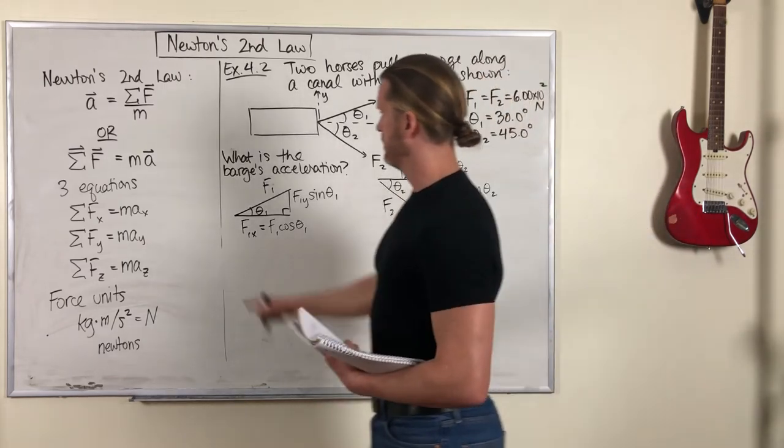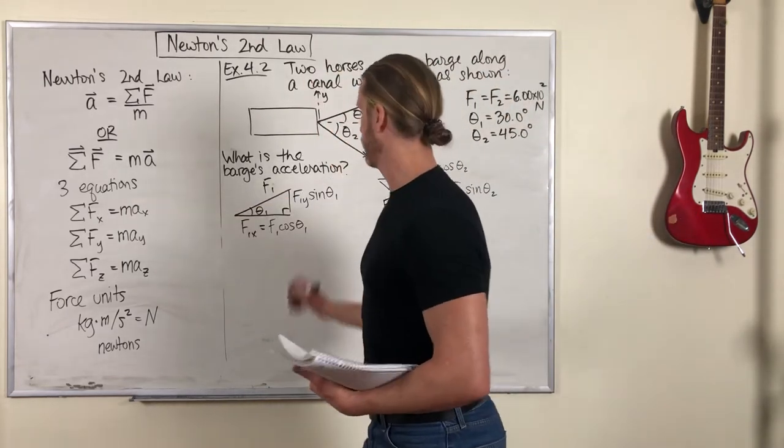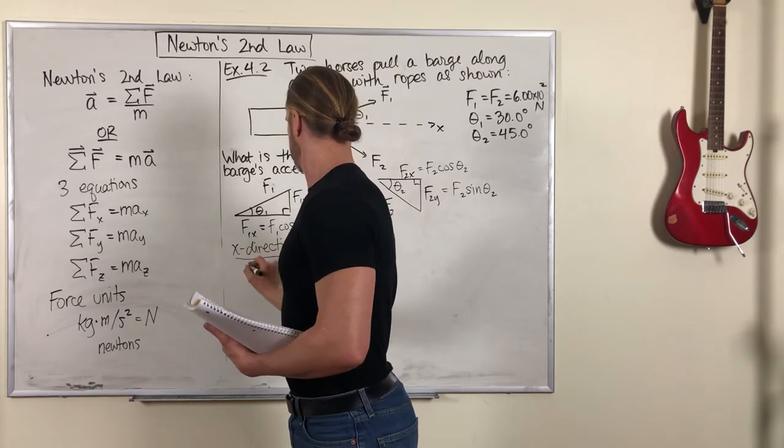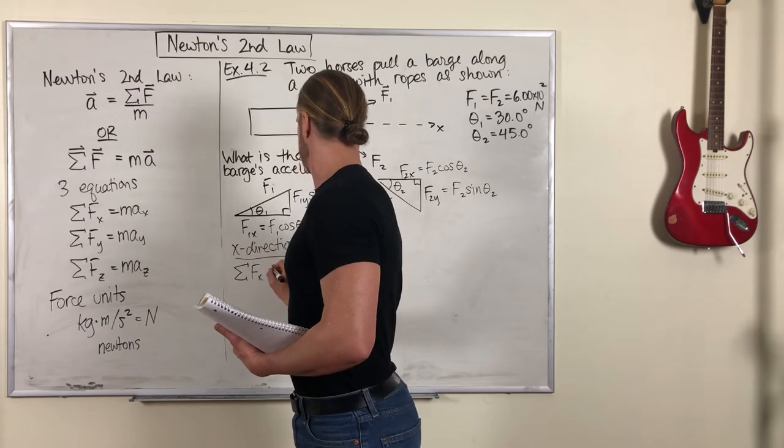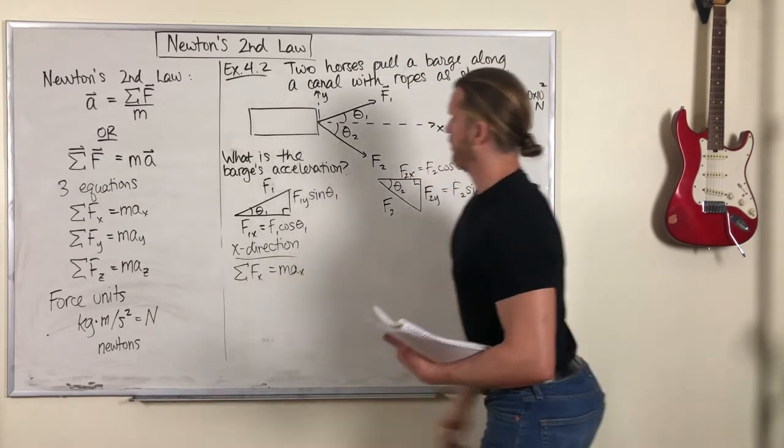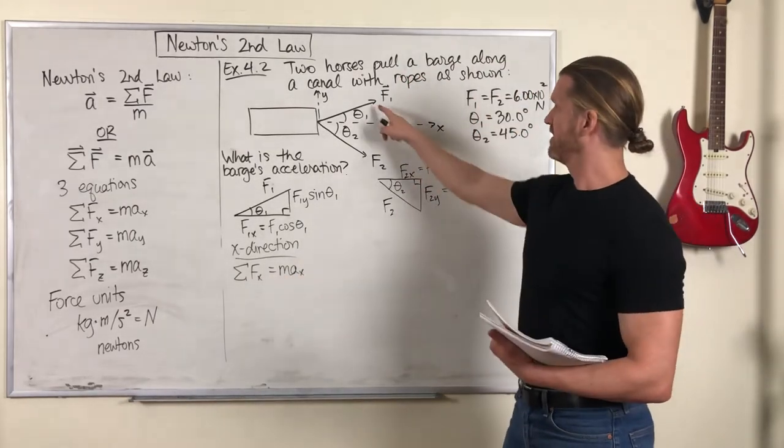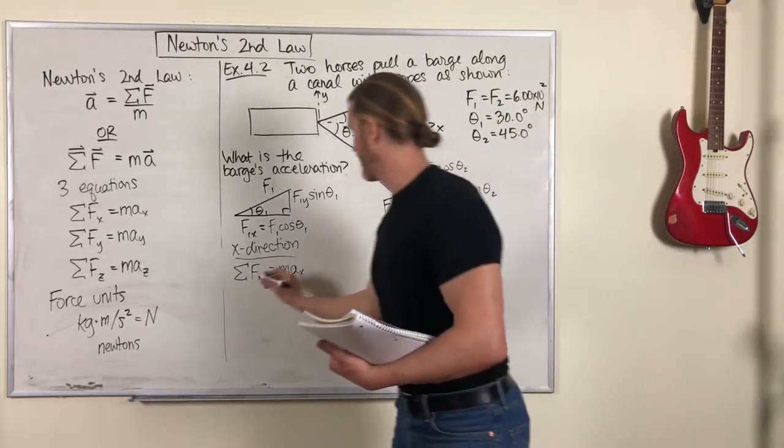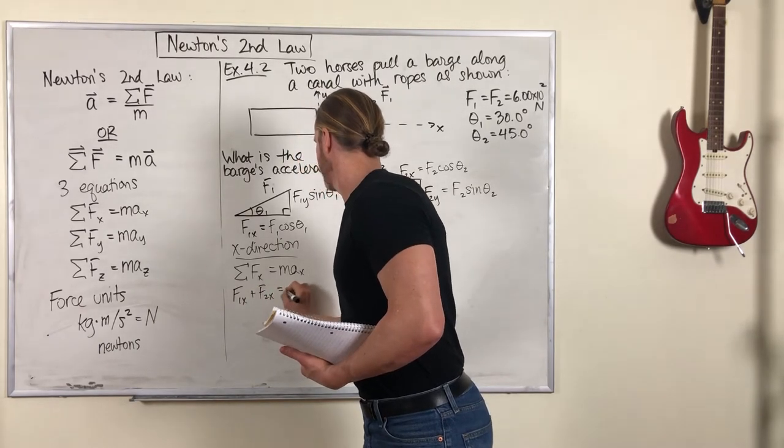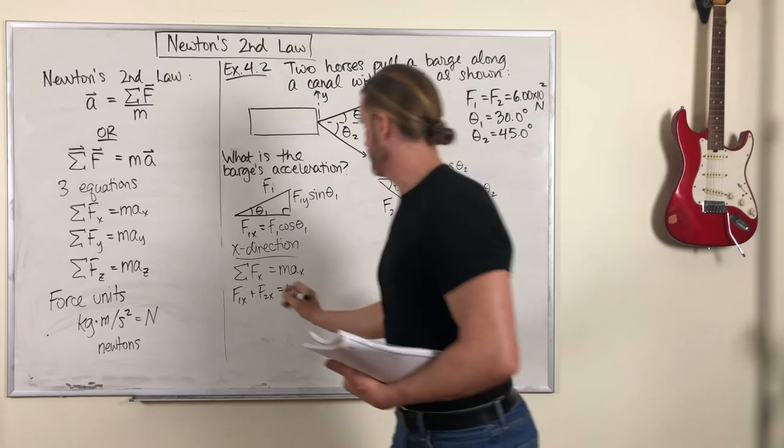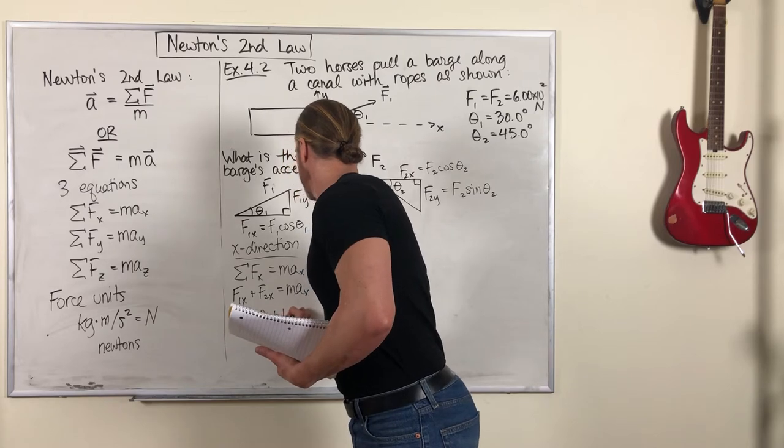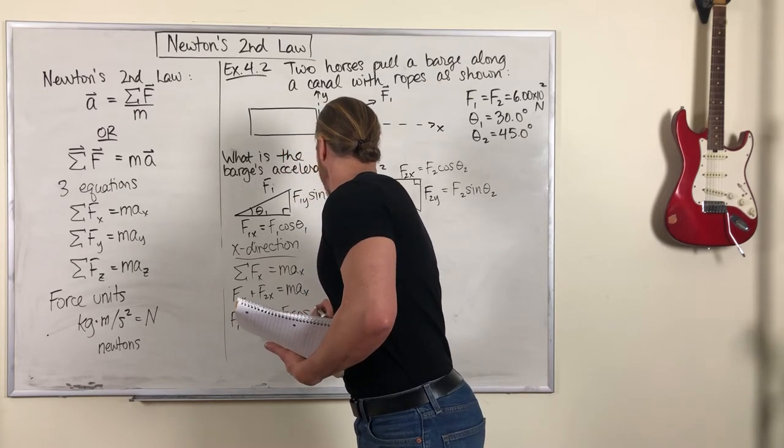Okay, so let's write down Newton's second law in the X direction. We add up all the forces in X. There are two of them, one for each horse. We've got F1x and F2x, or F1 cos theta 1 plus F2 cos theta 2.